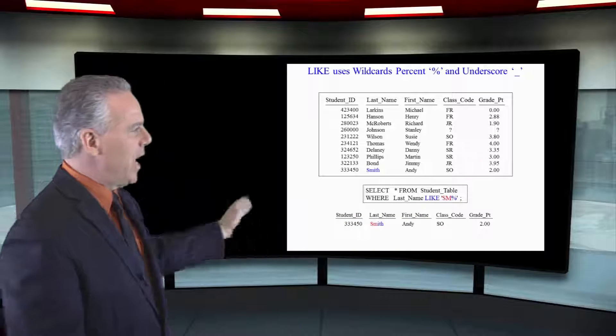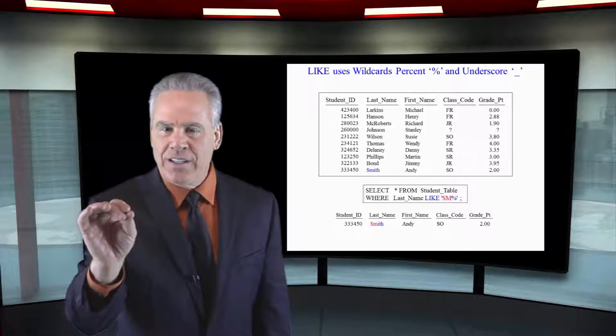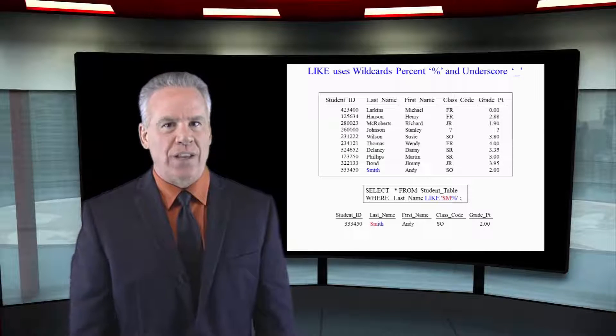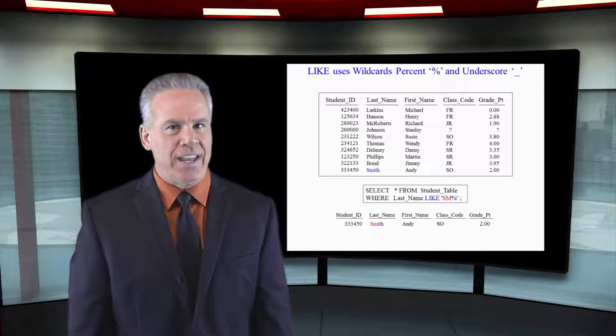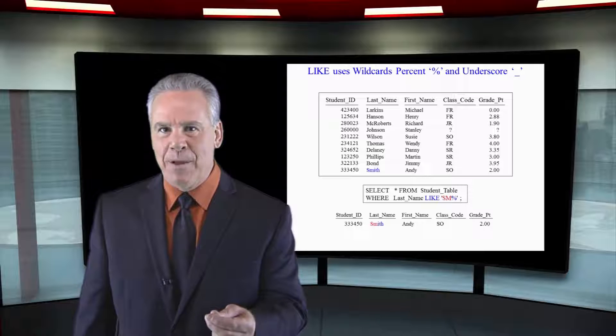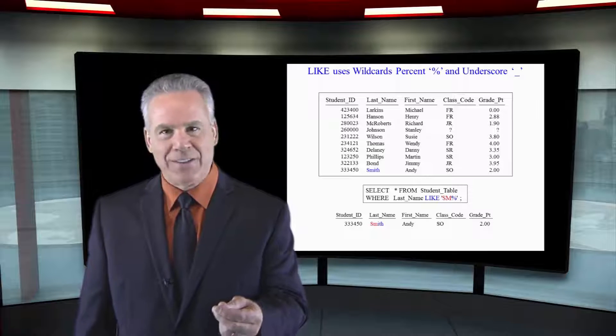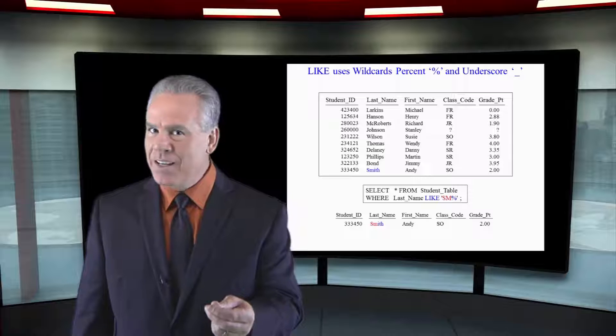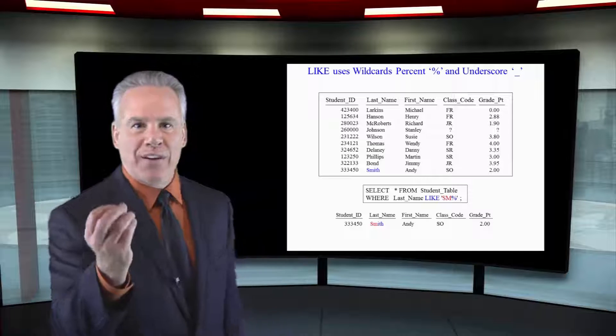In our example here where last name like S, M, PERCENTAGE, anybody whose last name starts with S and then is followed by an M like Smith, Smythe, Smoth, Smittenson, Smithsonian, they're coming back.